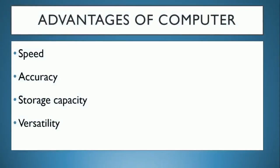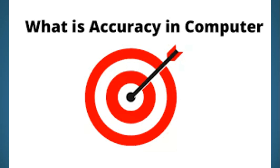The advantages of a computer are speed, accuracy, storage capacity, and versatility. Speed means it has much greater speed compared to us. When we do calculations, we spend a lot of time, but using a calculator or computer you can work very fast. Accuracy — it doesn't make mistakes. If mistakes happen, it is because of the wrong command given by us.